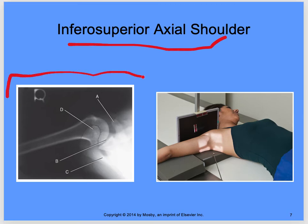For the inferior superior axial shoulder, this is another picture you need to be able to label: A is the coracoid, D is the acromion, B is the glenohumeral joint, and C is the spine of the clavicle.